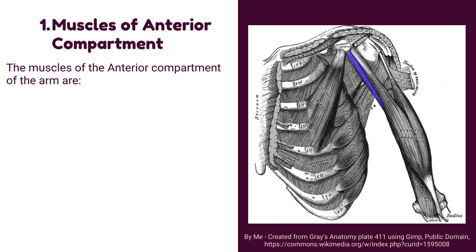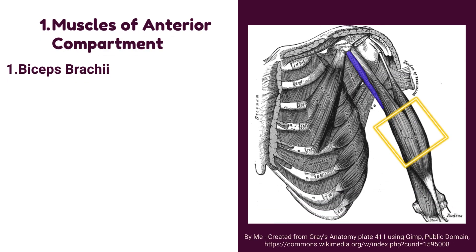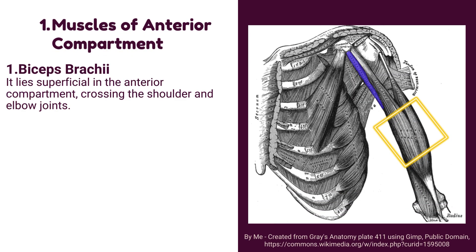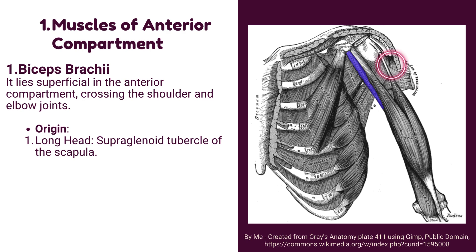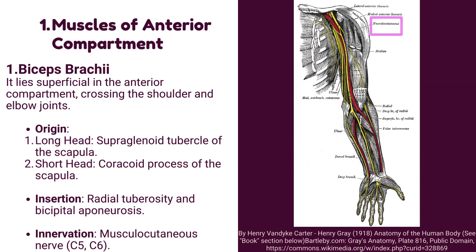The muscles of the anterior compartment of the arm are: biceps brachii muscle, brachialis muscle, and coracobrachialis muscle. Number 1: biceps brachii muscle. It lies superficial in the anterior compartment, crossing the shoulder and elbow joints. Origin of biceps: its origin has two heads. Long head originates from the supraglenoid tubercle of the scapula. Short head originates from the coracoid process of the scapula. Insertion: it is inserted into the radial tuberosity and bicipital aponeurosis. Innervation: it is supplied by the musculocutaneous nerve.